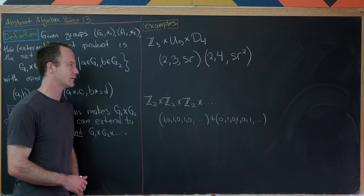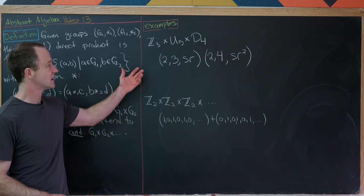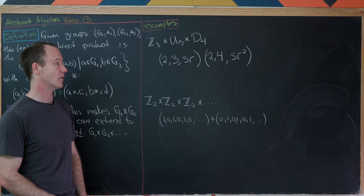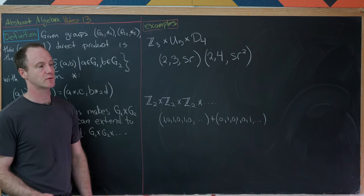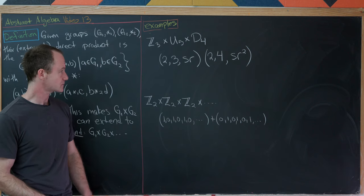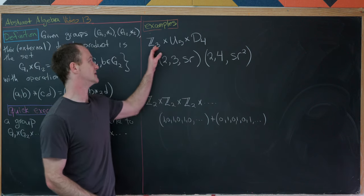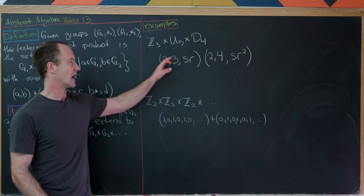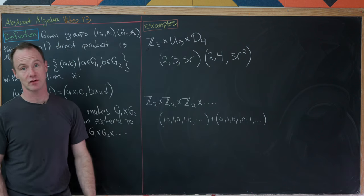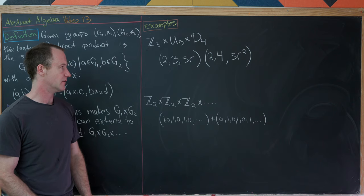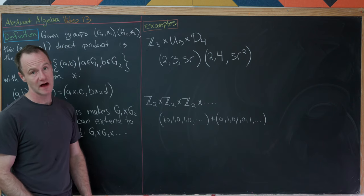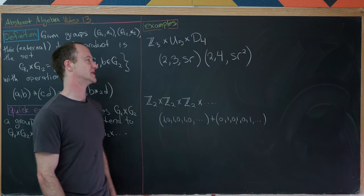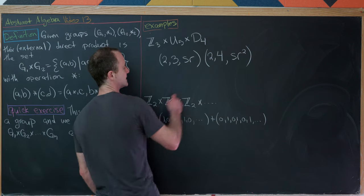Let's look at some examples before proving general results. Our first example is Z3 cross U5 cross D4 — three totally different groups. The first entry comes from Z3, the additive group of integers modulo 3. The second entry comes from U5, the multiplicative group of units modulo 5. And D4 is the symmetries of the square.